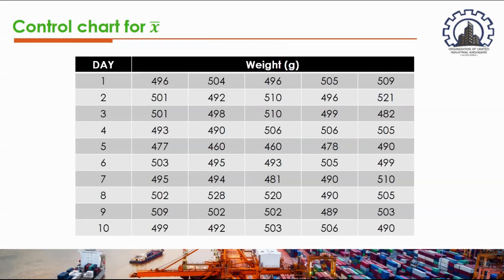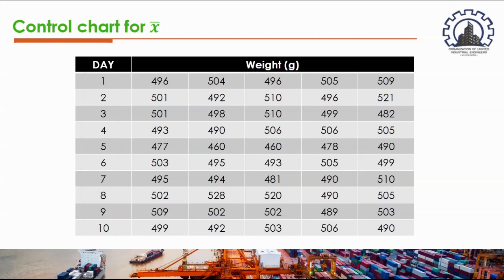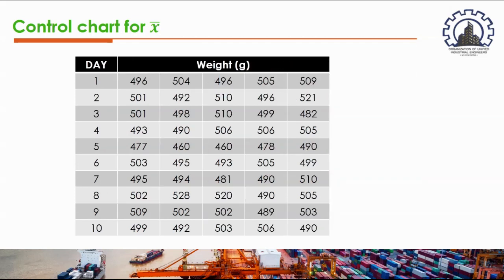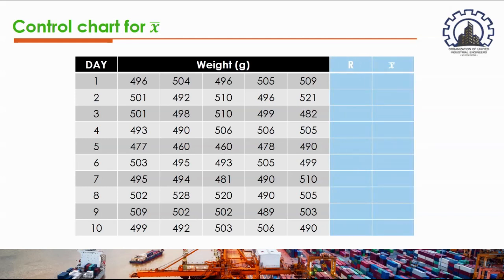In this example, we use process data with a subgroup size of 5, collected every day for 10 days. Our objective is to determine if the process mean is in statistical control. As required by the control limit formulas, we first obtain the sample ranges. The range is the largest minus the smallest value in each sample. For the first day, the range is 509 minus 496, which equals 13.